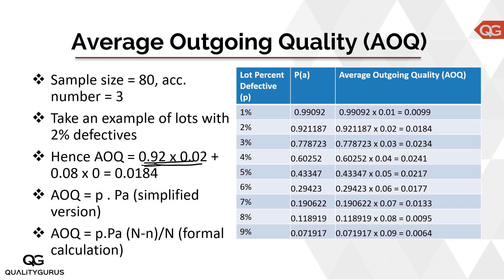What about that 8% that were rejected? Since those 8% of lots have been fully checked and all bad parts replaced with good parts, those lots will have 0 defectives. So: 0.92 × 2% plus 0.08 × 0 gives an average outgoing quality of 0.0184, or roughly 1.8%. Even though the incoming lots average 2% defectives, what we receive on the other end is 1.8% defective rate. This is the simplified formula.